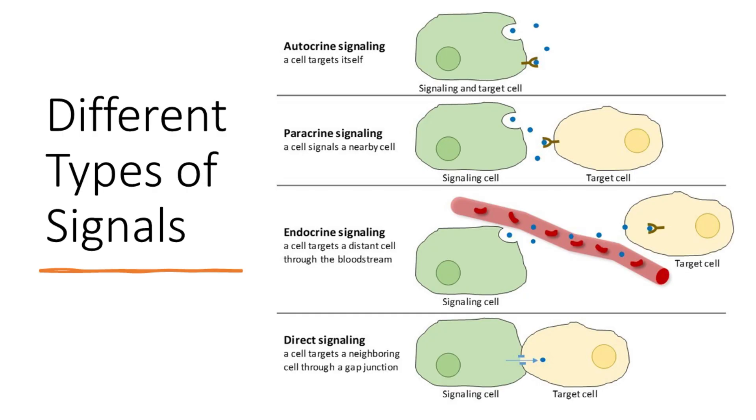There are many types of signaling molecules. They may be small molecules, for example, an amino acid or a phospholipid. Alternatively, they may be proteins like hormones or cytokines. They may be carbohydrates. They might take different forms in terms of their molecular structure, but we tend to describe signals by where they come from.